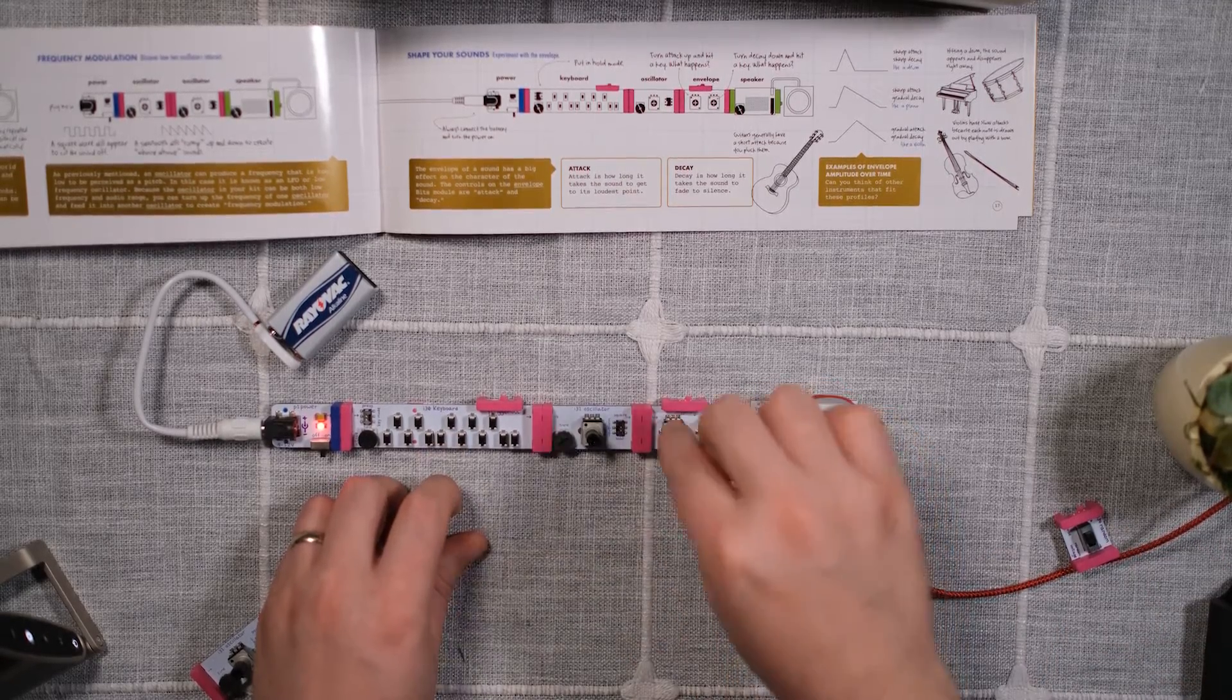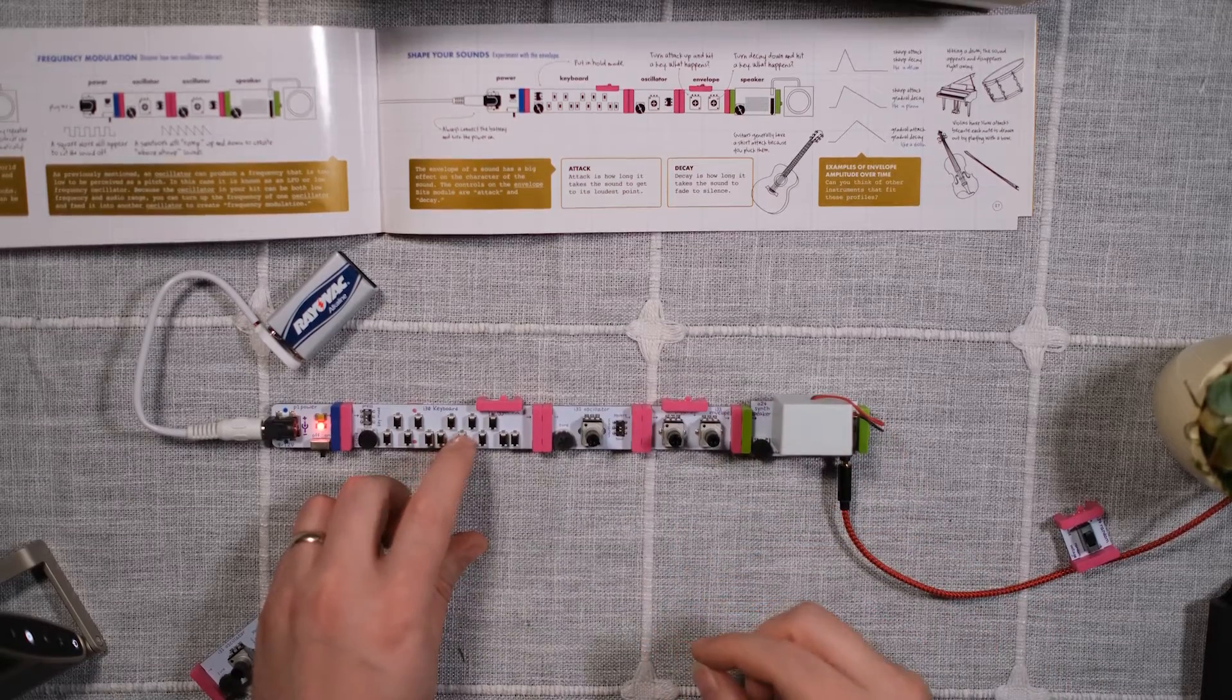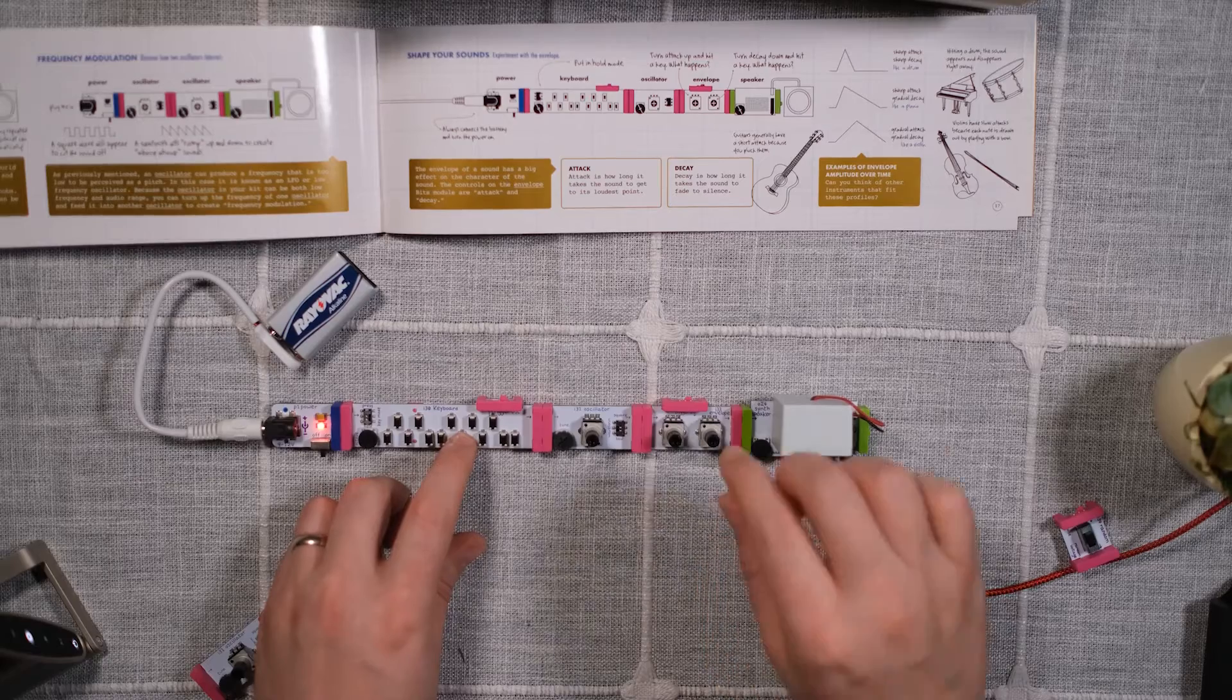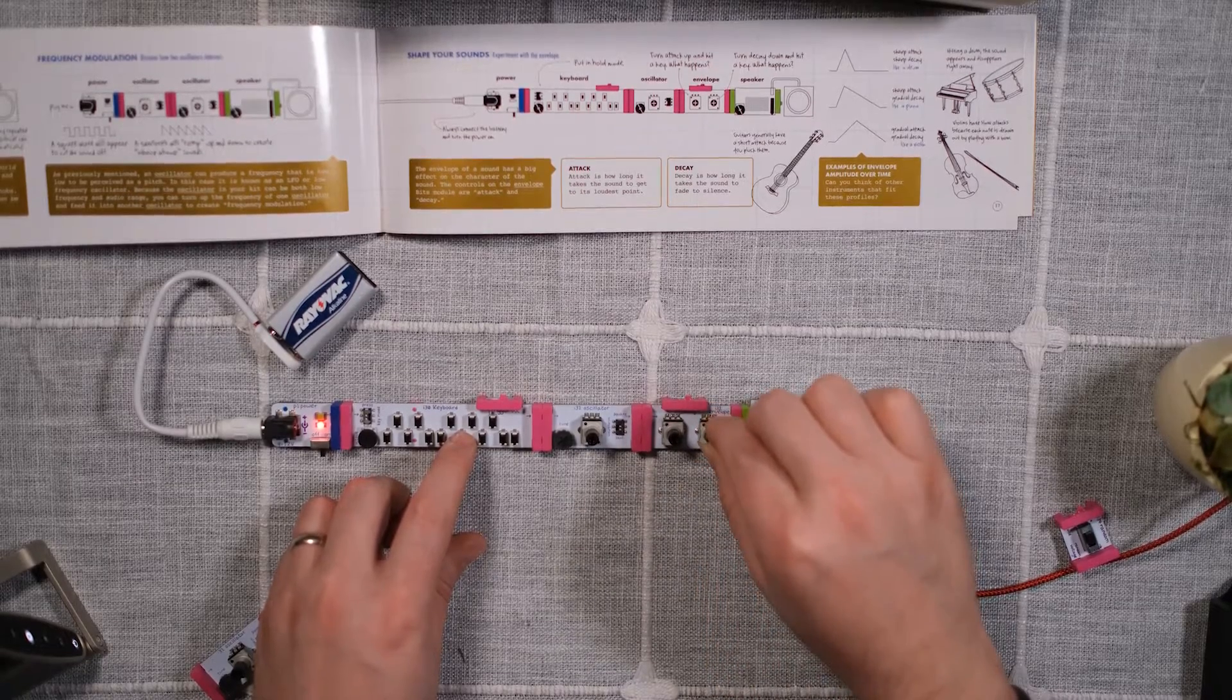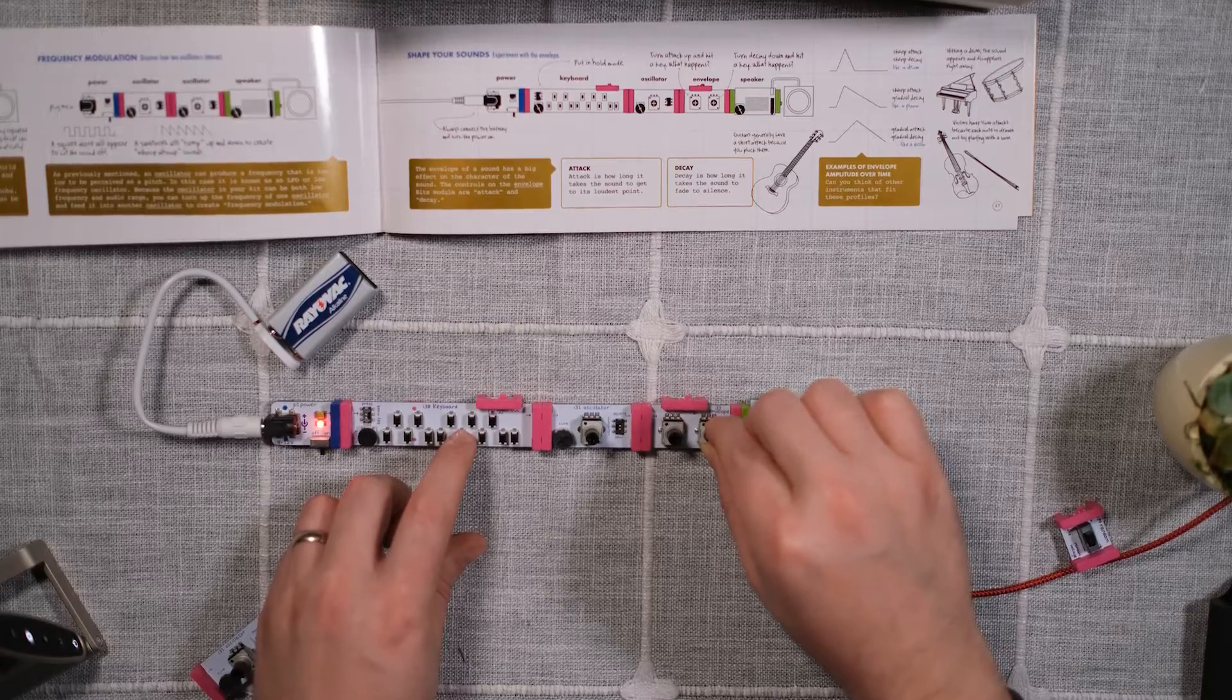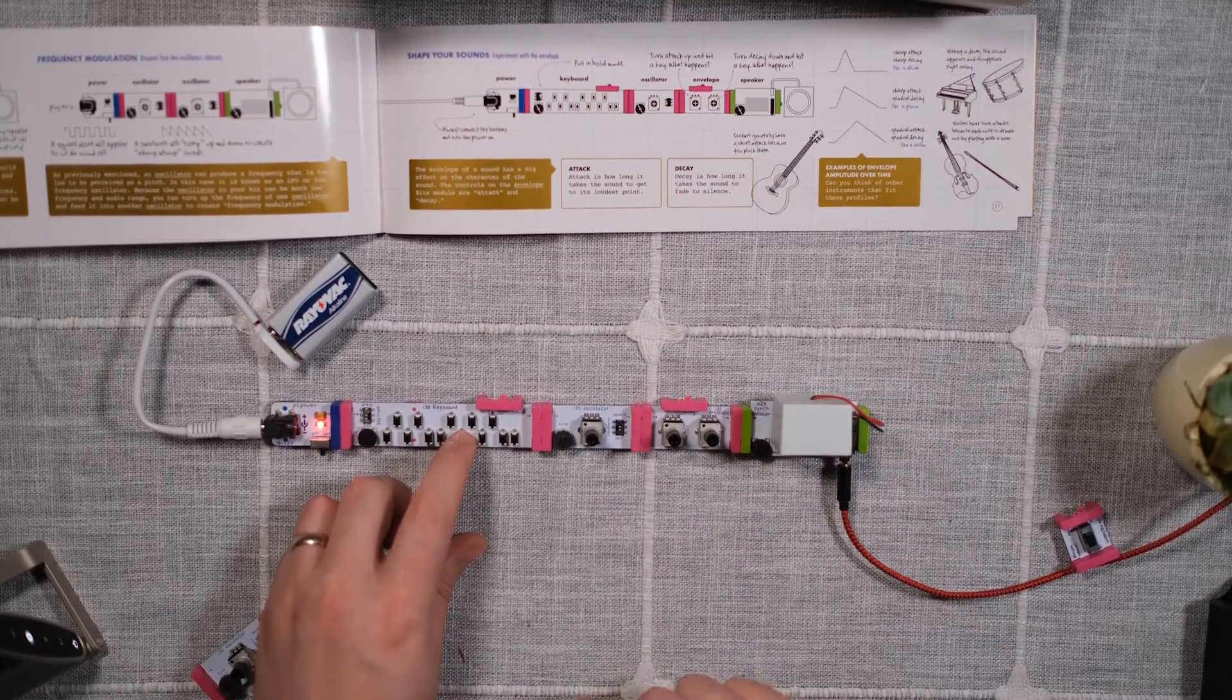And if we turn both all the way down, we get a plucky sound instead. So now when there's no decay, you just hear a click, but then you can kind of dial in and get whatever shape you want.